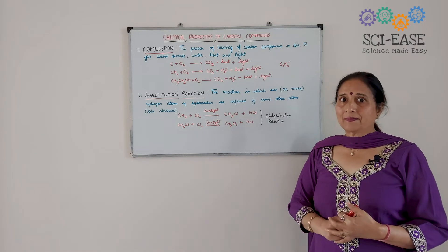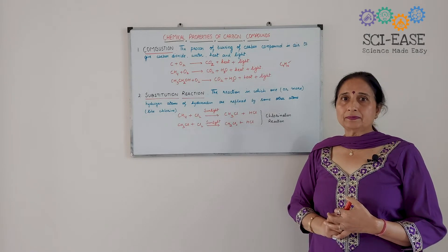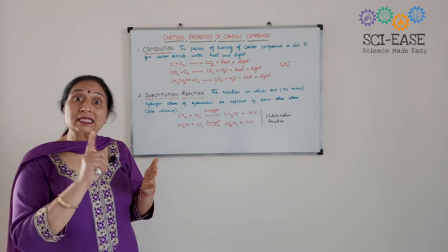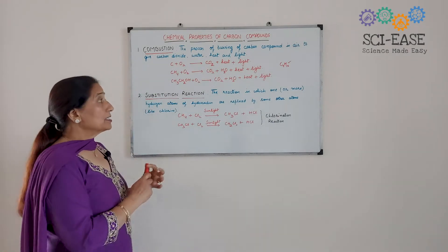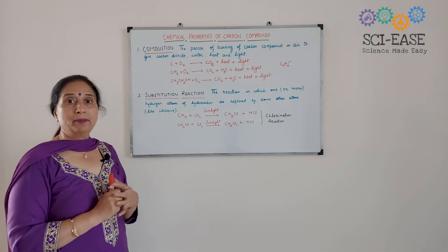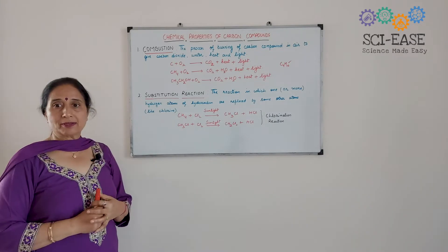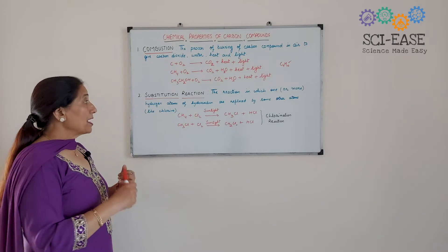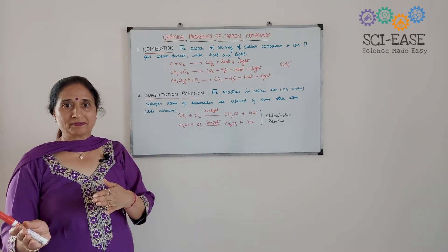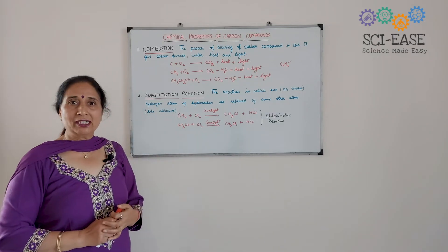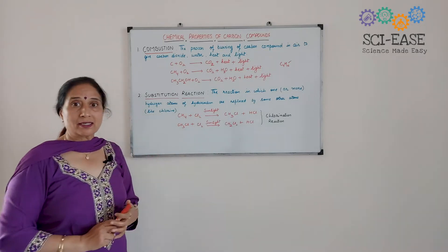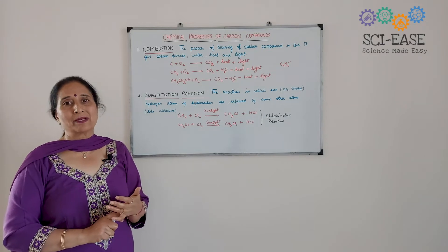Now, the second type — substitution reactions — are shown by only alkanes. Combustion is shown by both saturated and unsaturated hydrocarbons, but substitution reactions are shown by only saturated hydrocarbons, that is alkanes. Alkanes have single bonds and they are unreactive. The definition of substitution reaction: it is a reaction in which one or more hydrogen atoms of a hydrocarbon are replaced by some other atoms like chlorine or bromine. If replaced by chlorine, the process is known as chlorination. This reaction takes place in the presence of sunlight.